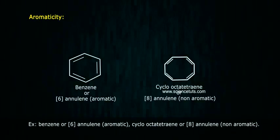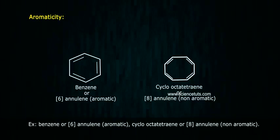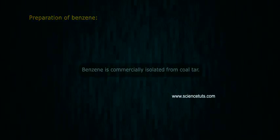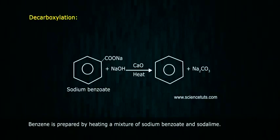Examples: Benzene is [6]annulene (aromatic); cyclooctatetraene is [8]annulene (non-aromatic). Benzene is commercially isolated from coal tar.